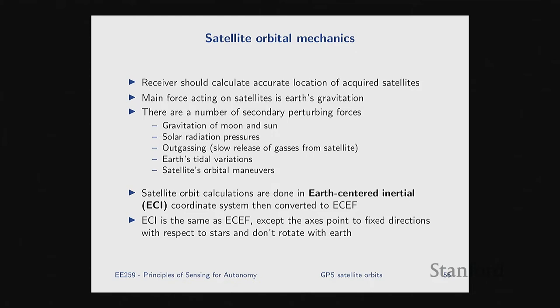There are also secondary forces that perturb the main gravitational force, and these vary with time. Some of these are the gravitation of the Moon and Sun, solar radiation, an effect called outgassing (the unintentional slow release of gases from the satellite), tidal variations on the Earth, and intentional orbital maneuvers the satellite can do to course-correct. All of these need to be factored in when finding the position of the satellite in orbit.